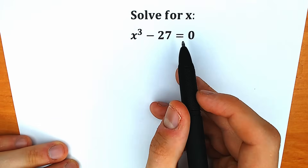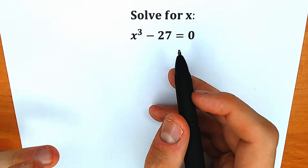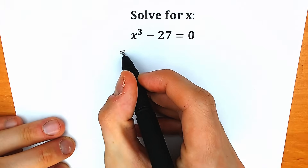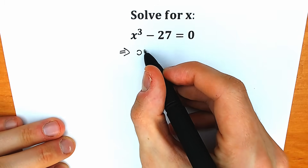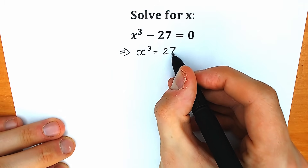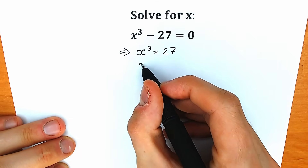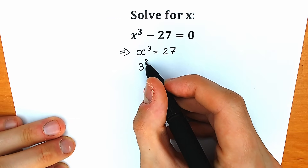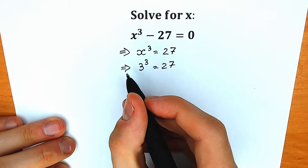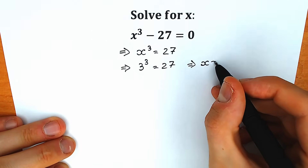x³ minus 27 equals 0. A lot of students might be saying, hey mister, this is like the easiest question I've ever seen, because from here we can easily find x³ equal to 27. When we plug in 3, we have 3³ equal to 27, so x is equal to 3.